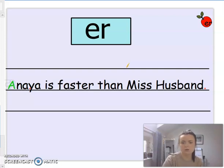Okay, let's have a look. Let's read it together. Anaya is faster than Miss Husband. So Anaya Chatun is faster than me. Oh, I need to practice my running.